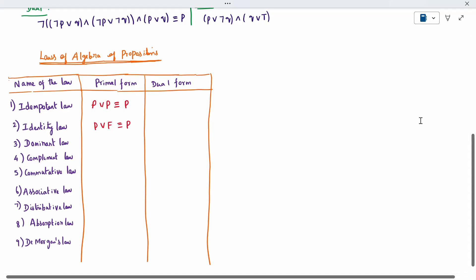Dominant law is nothing but p conjunction true, then you get the answer to be true. It is called dominant law. Complement law is nothing but p conjunction negation p, when you get true. It is called complement law. Commutative law, everyone knows. It is a to b, b to a. So the same thing. P conjunction q is equivalent to q conjunction p. This is called equivalence. Completed.